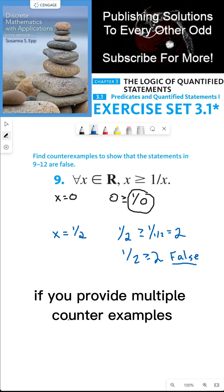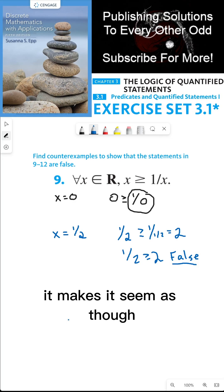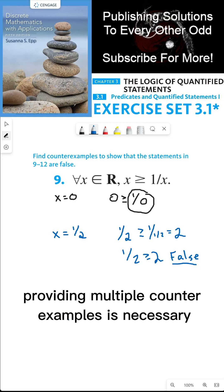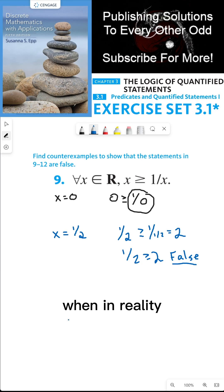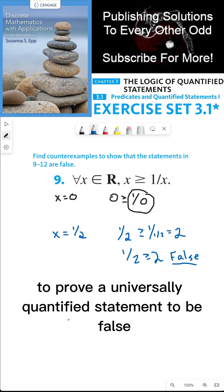If you provide multiple counterexamples, it makes it seem as though providing multiple counterexamples is necessary, when in reality, it's just fluff. You only need one counterexample to prove a universally quantified statement to be false.